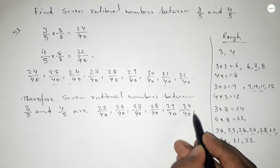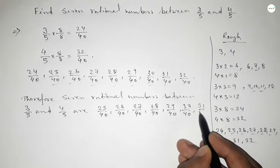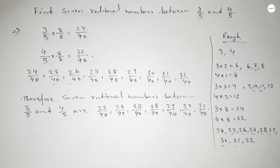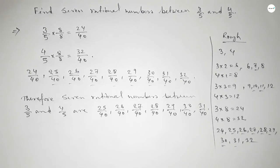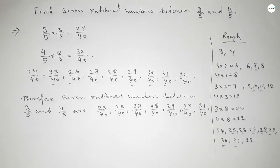So this is the process to find out seven rational numbers between 3 over 5 and 4 over 5. That's all. Thanks for watching — if this video is helpful to you, please share it with your friends.